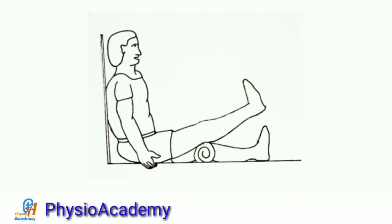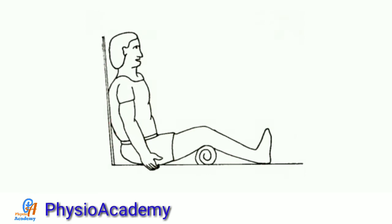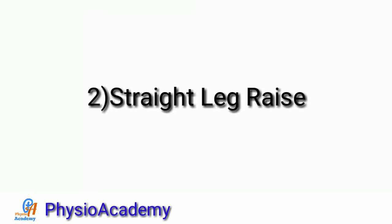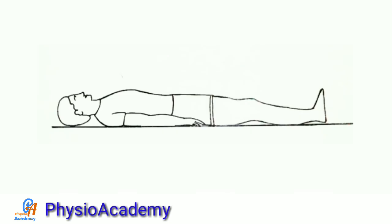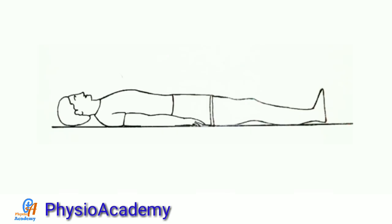Second exercise: straight leg raising (SLR). Patient in supine position, then ask the patient to lift his leg up to 40 degrees, hold that position for five seconds, and get back to starting position.